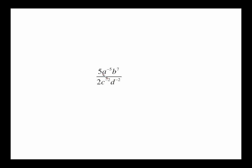The same thing applies with coefficients — they're not going to move anywhere either. So the 5 over 2 stays where it is because they're coefficients. a to the negative 5 is a negative exponent in the top — it goes to the bottom. b to the 7 is a positive exponent in the top — leave it. c to the negative 2 is a negative exponent in the bottom — send it to the top. d to the negative 2 is also a negative exponent in the bottom — send it to the top. That gives the same expression with all positive exponents.